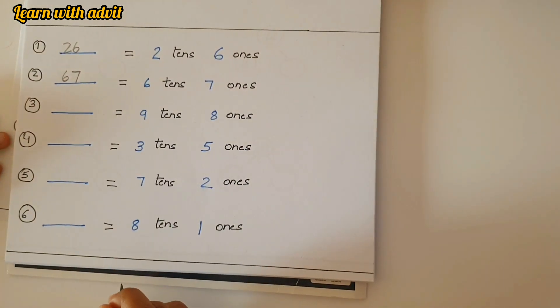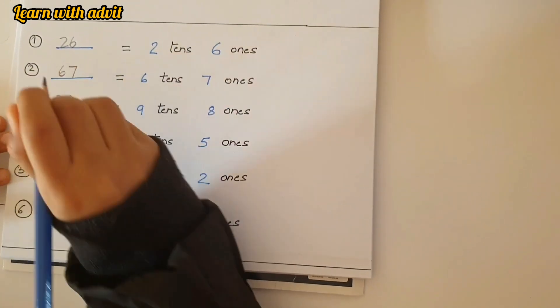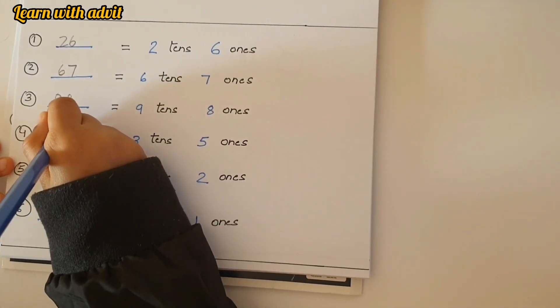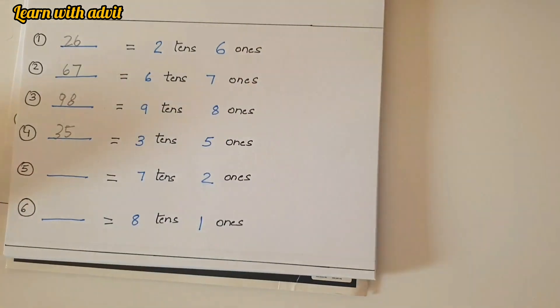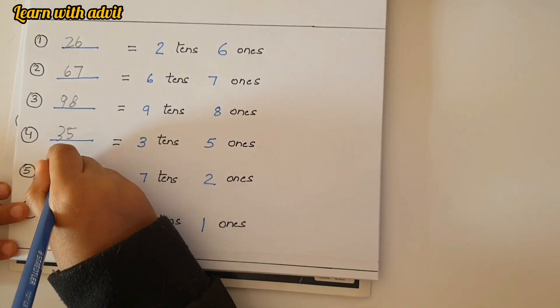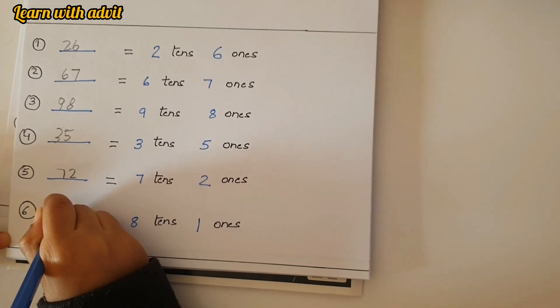Nine tens and eight ones, ninety eight. Three tens and five ones, thirty five. Next is, move your hand, seven tens and two ones, seventy two. And last one is eight tens and one, eighty one. Very good.